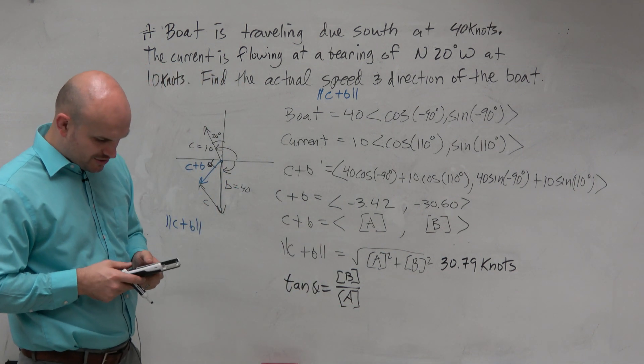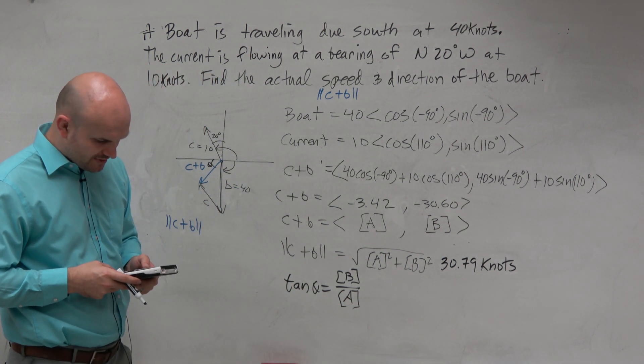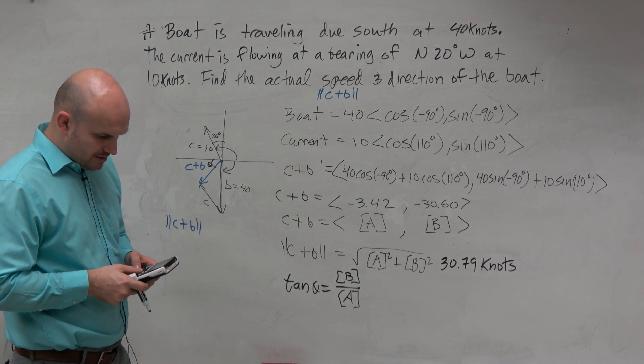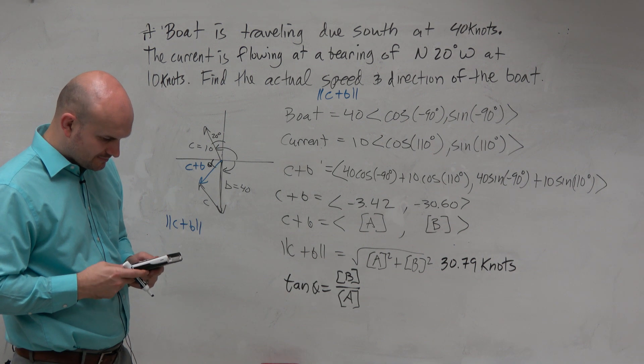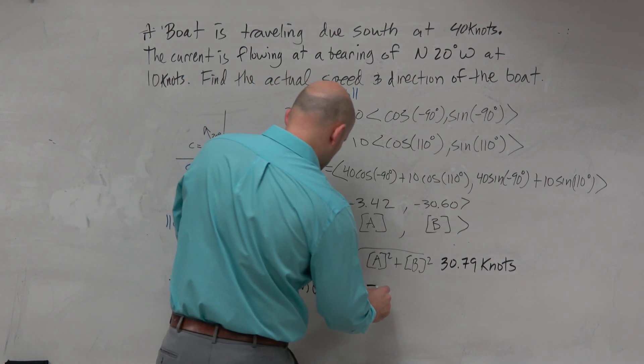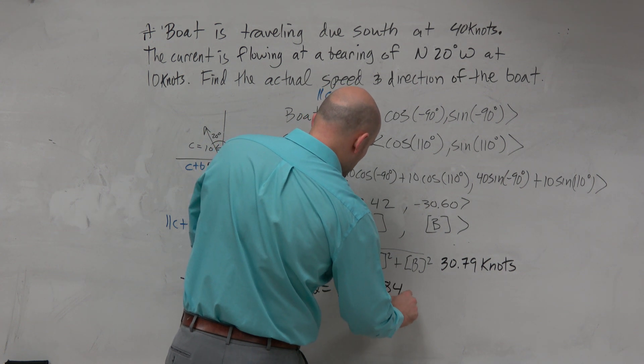So I'll just do tangent inverse of alpha B divided by alpha A. And I get 83 degrees. Actually, 84 degrees as I round it to the nearest whole.